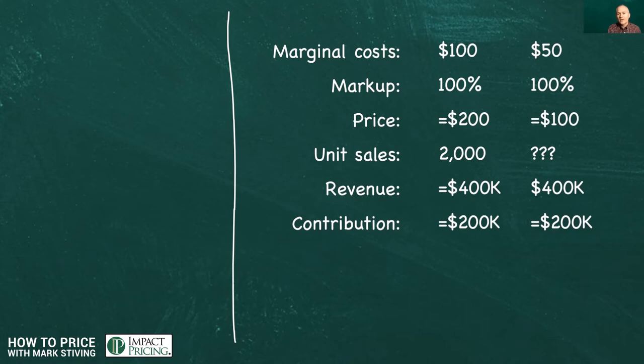The only thing we haven't figured out yet, what's sales got to be? And it turns out that if we cut our costs in half, we have to double our sales just to make the same revenue and the same profit. Does that make sense? Why would you have to increase sales because we lowered our costs?